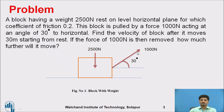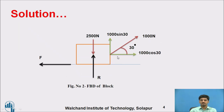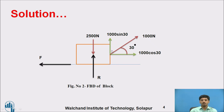Our first duty is to prepare a free body diagram for this particular figure. In the free body diagram of the block, show the reactions. In the vertical downward direction, weight is present; in the opposite direction, the reaction force is present. The additional load of 1000 Newton is inclined, so show the x and y components: x-component = 1000 cos 30, y-component = 1000 sin 30. Since the block moves in the horizontal direction, the frictional force is developed in the exactly opposite direction.